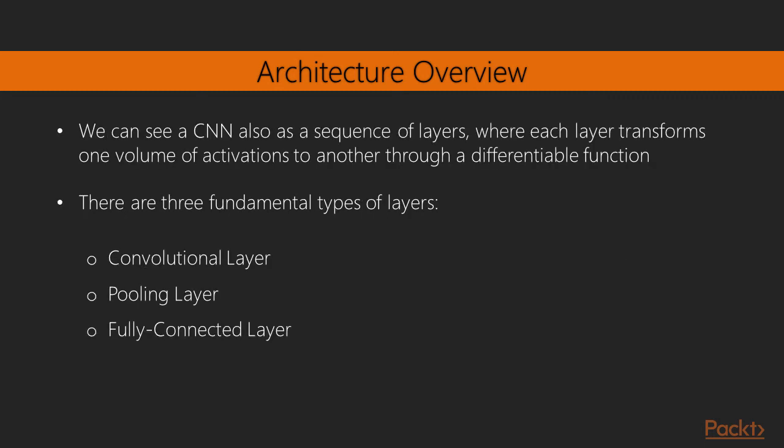We can also see a CNN as a sequence of layers which transform one volume of activations to another through a differentiable function. There are three fundamental types of layers in a CNN: convolutional layers at the very heart of convolutional neural networks, pooling layers useful for reducing the computational space and retaining only the most important information, and the fully connected layers exactly the same we have seen in regular neural networks.